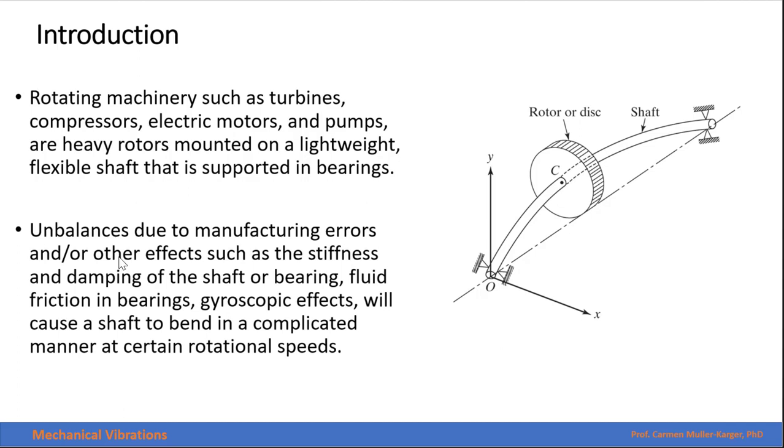unbalance due to manufacturing errors and or other effects such as stiffness and damping of the shaft or the bearing, fluid friction in the bearings, gyroscopic effects, or many others, will cause a shaft to bend in a complicated manner at certain rotational speeds.